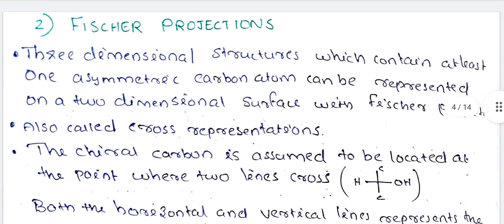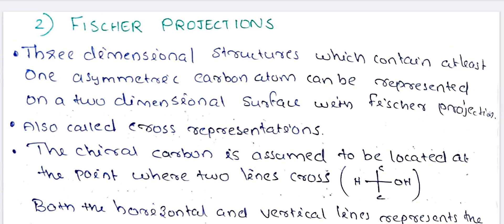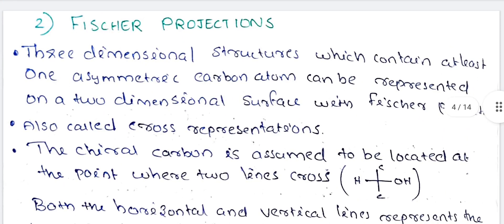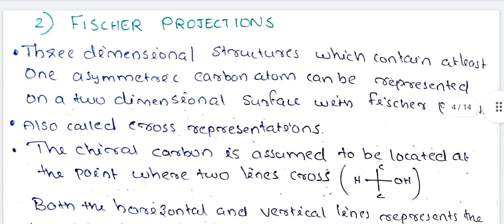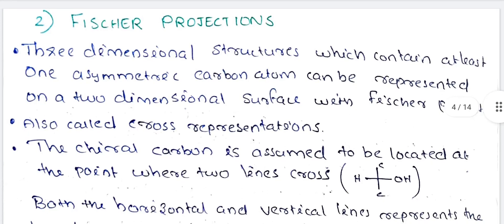Next, Fischer Projections. We are going to discuss Newman projections, Fischer Projections, and Sawhorse projections. Three-dimensional structures which contain at least one asymmetric carbon atom can be represented on a two-dimensional surface using Fischer Projections. This is also called Cross Representation.